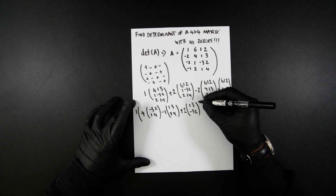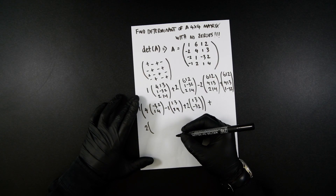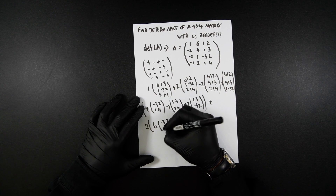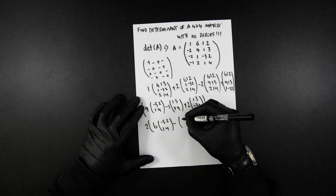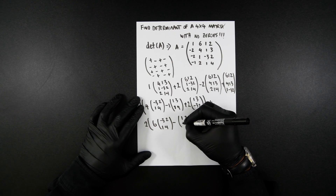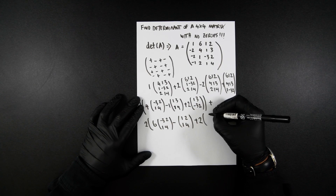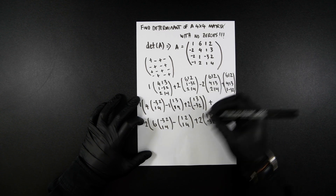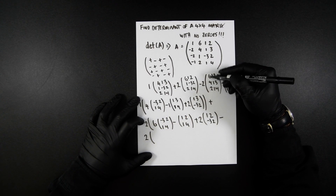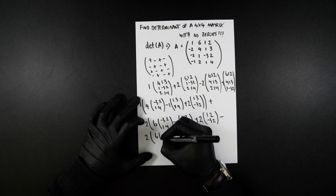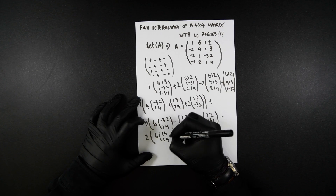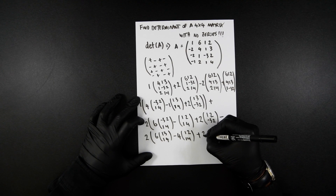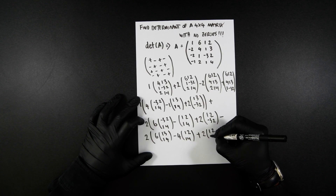Now let's do the second one. Plus 2, and it's going to be 6. So I'm going to pick the first column again: 6, minus 3, 2, 1, 4, minus 1 — because that's going to be in the negative value — 1, 2, 1, 4, plus 2, 1, 2, minus 3, 2. Then we have minus 2, and let's do that. We're going to pick the first column. So it's going to be 6, 1, 3, 1, 4, minus 4, 1, 2, 1, 4, plus 2 — so I've picked this column — 2, and then it's 1, 2, 1, 3.